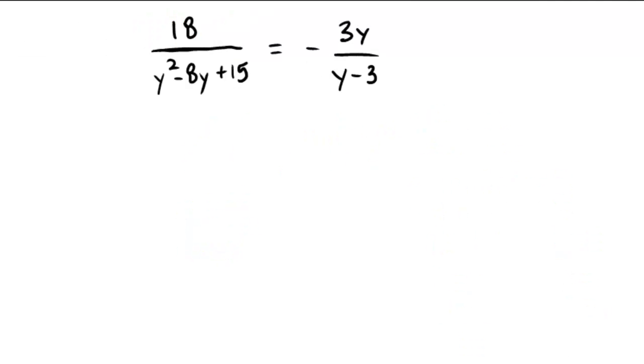Okay, why don't you pause the video and try to do this problem on your own. 18 over y squared minus 8y plus 15 equals negative 3y over y minus 3.